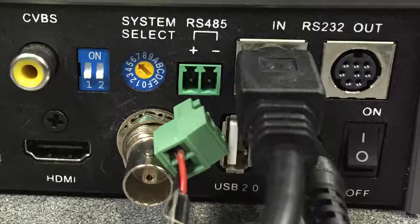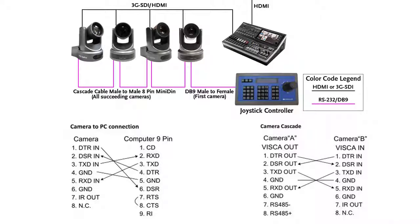If you are using RS-232, we have a specific cable with specific pinouts required. For the cable between the joystick and the first camera, on the computer nine-pin side you need pins two, three, and five — receive, transmit, and ground. For the cascade cable going between camera one and camera two for RS-232, you need five cables: pin one goes to pin two on the other side, pin two goes to pin one on the other side, pins three and five swap, and pin four stays straight through.